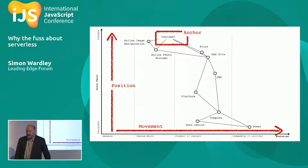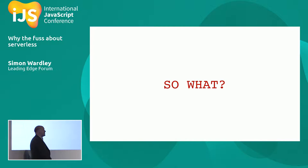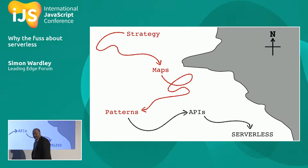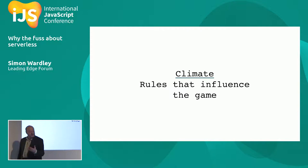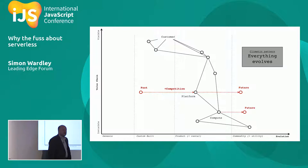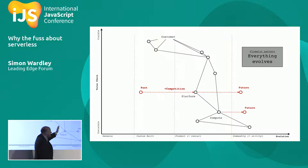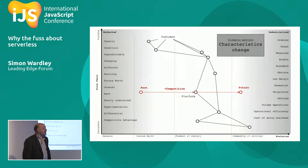So I was able to take my value chain, flatten that evolution curve at the bottom — genesis, custom-built, product, commodity — and simply put things where they were. That was the first map I produced in 2005. I had anchor, position, and movement. I showed this to others and they said: so what? Well, that brings us to patterns. If you can observe the landscape, you can start to observe climatic patterns — the rules of the game, the things that change the environment regardless of what you do. There are about 30 of them. The simplest: everything evolves.